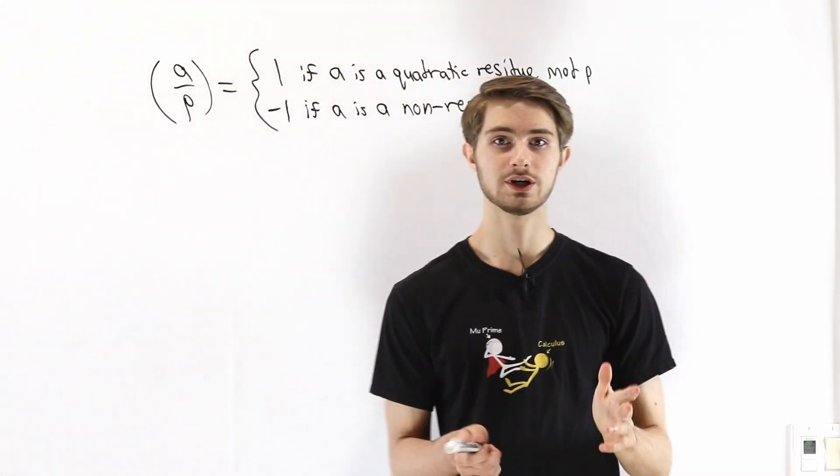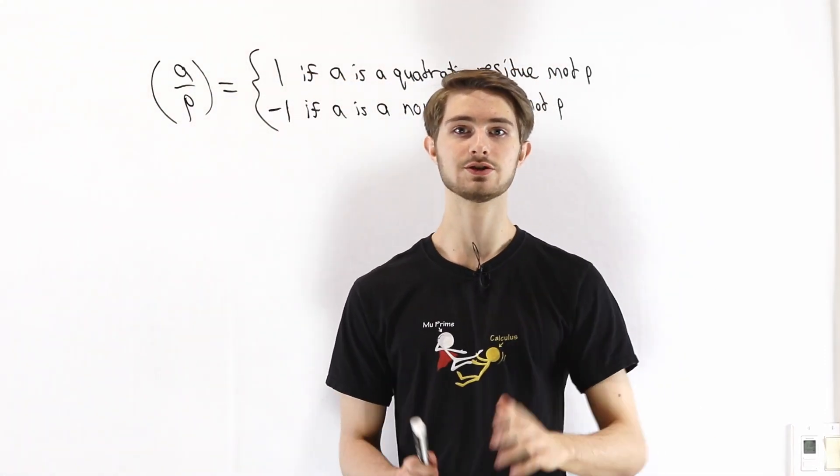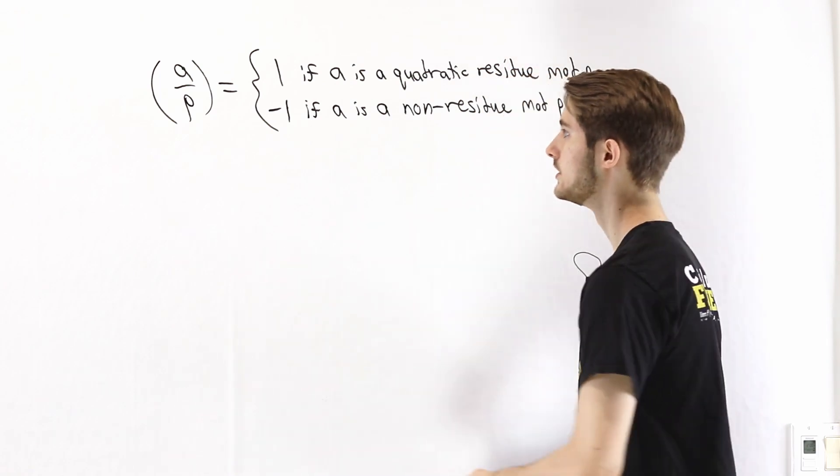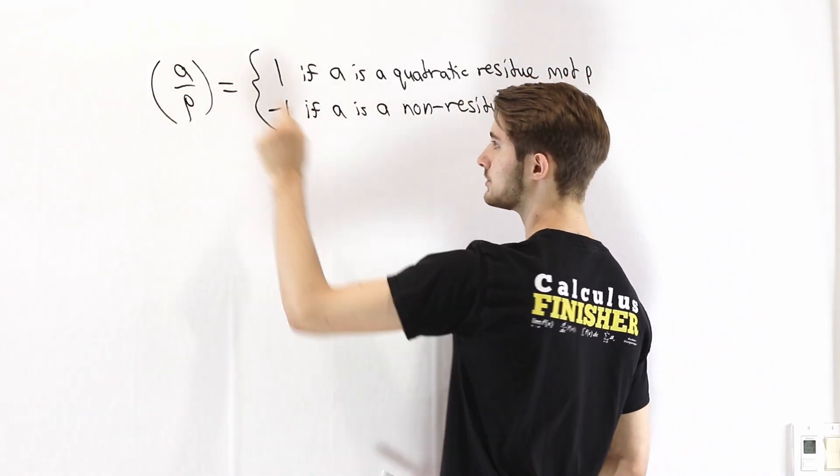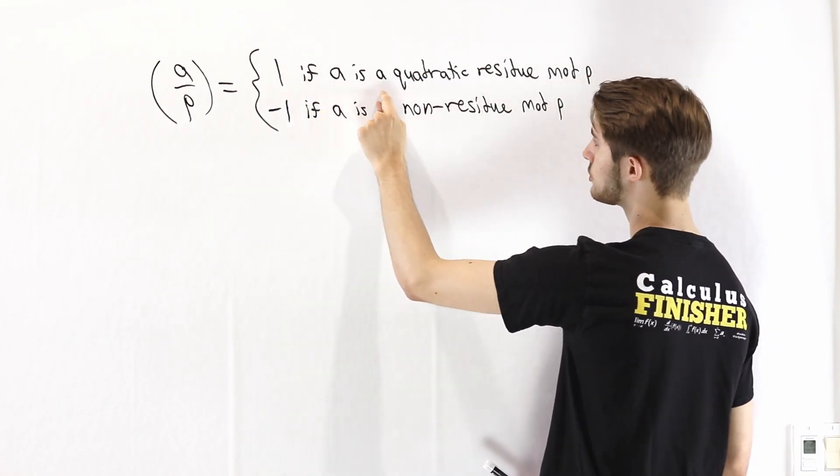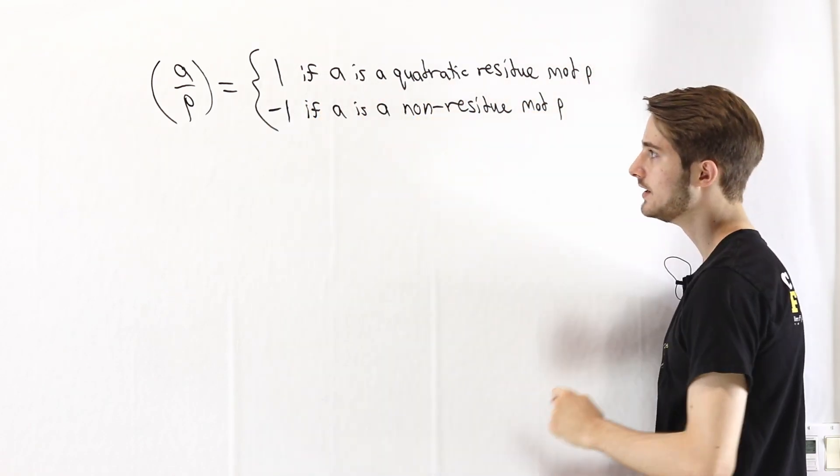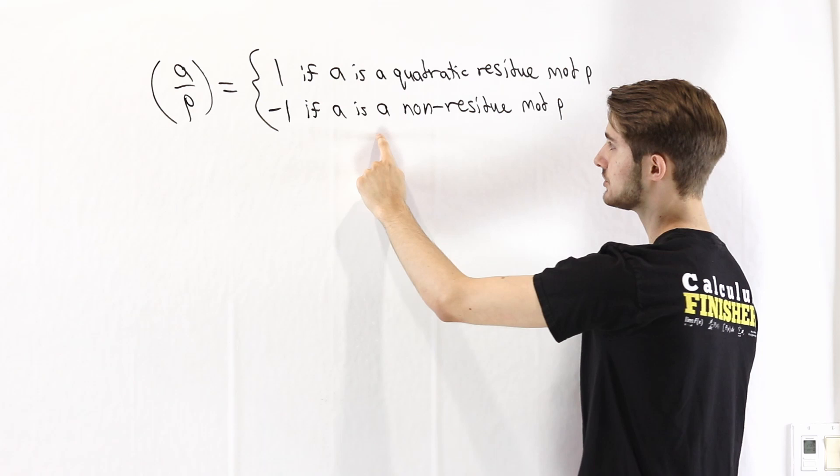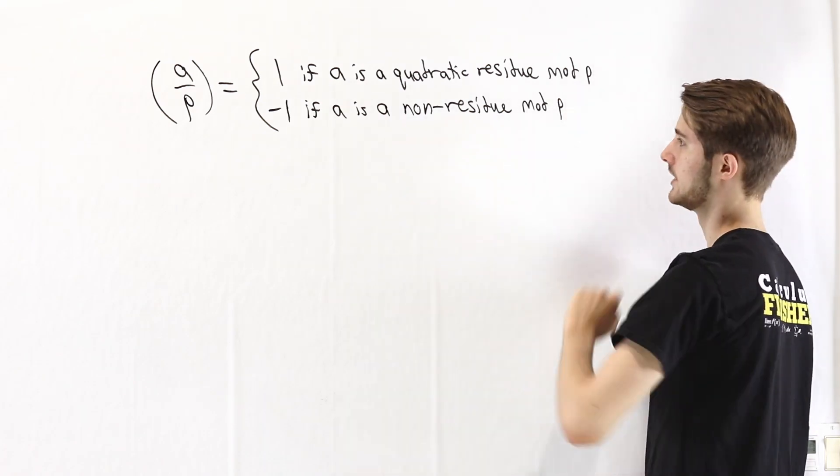We are going to introduce the Legendre symbol, which is a useful notation for quadratic residues. The Legendre symbol of A with respect to P is defined as 1 if A is a quadratic residue mod P, and negative 1 if A is a quadratic non-residue mod P.